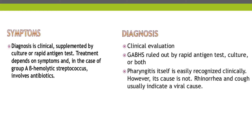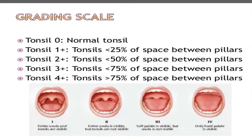This is a grading system for tonsil enlargement. Grade 1: tonsils occupy less than 25 percent of space between the pillars — the entire uvula and tonsils are visible. Grade 2: tonsils occupy less than 50 percent of the space between pillars — the entire uvula is visible but tonsils partially obstruct. Grade 3: tonsils occupy less than 75 percent of space between pillars. Grade 4: only the hard palate is visible, as seen on the image.